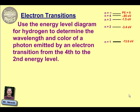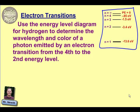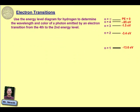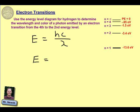So you'll see over here on the right-hand side, we have the energy values for hydrogen. We're going to use our equation which says that energy is equal to h times c divided by the wavelength. The energy we're looking at is the energy given off when we go from the fourth to the second energy level. To find that energy value, we are simply going to subtract those two energies.